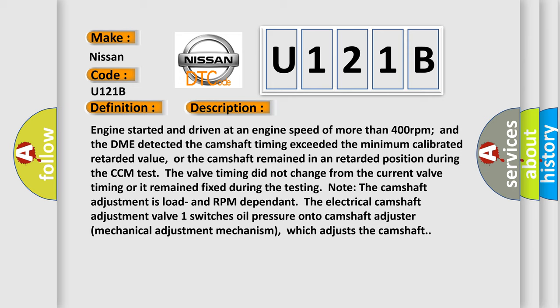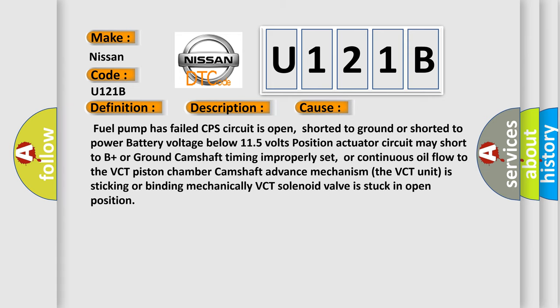This diagnostic error occurs most often in these cases: fuel pump has failed; CPS circuit is open, shorted to ground, or shorted to power; battery voltage below 11.5 volts; actuator circuit may short to B+ or ground; camshaft timing improperly set; or continuous oil flow to the VCT piston chamber. The camshaft advance mechanism or VCT unit is sticking or binding mechanically, or the VCT solenoid valve is stuck in the open position.